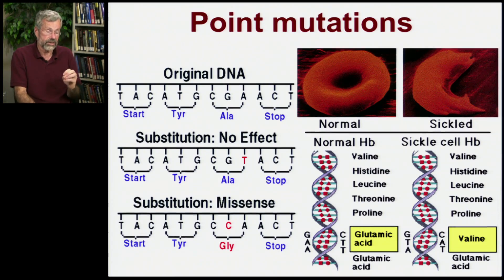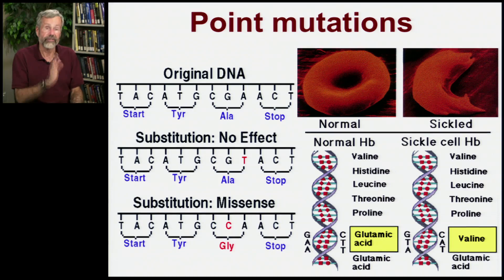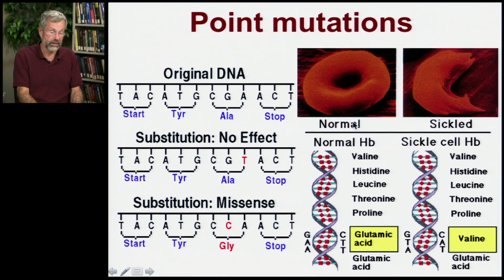So point mutations, as we've seen, can cause effects on phenotypes and they can have big profound effects like sickle cell anemia.